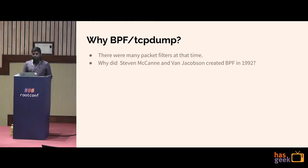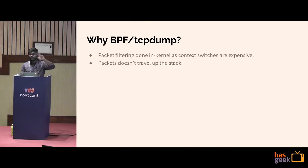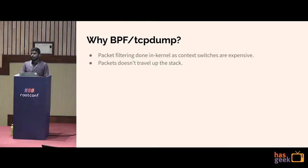Why was TCPdump or BPF originally created? Van Jacobson — who devised TCP congestion control algorithms that probably saved the internet in the 1980s and 90s — found that all packet filters at that time had very large overhead. You'd have a million-packet filter flow where packets had to travel all the way up from the network driver to user space, with many expensive context switches.